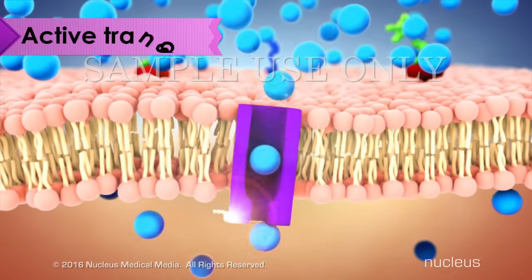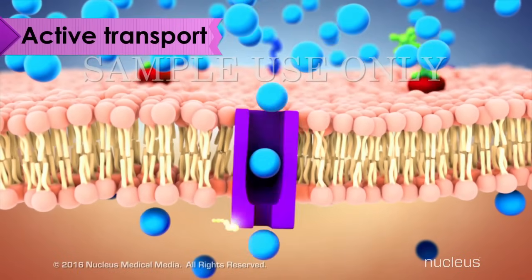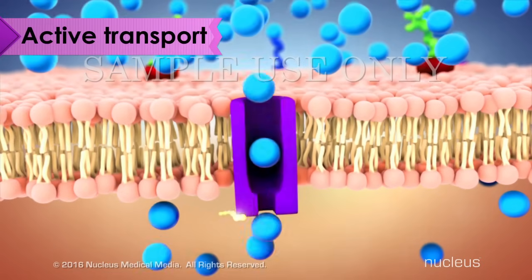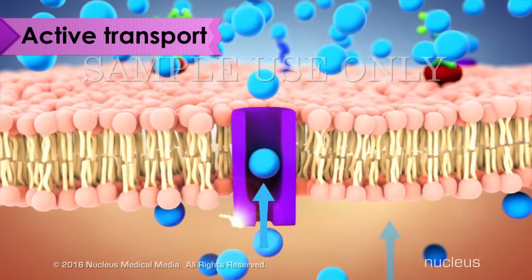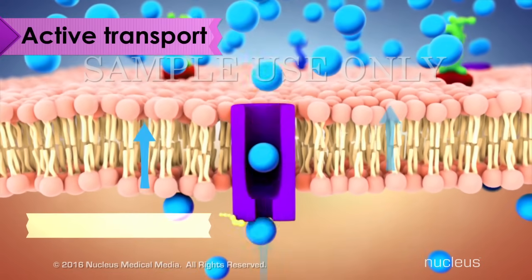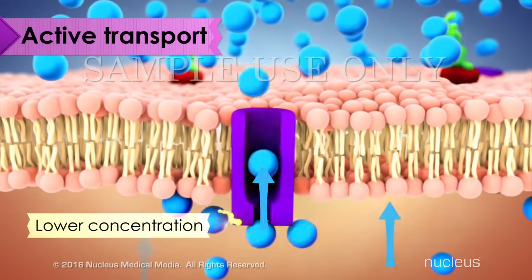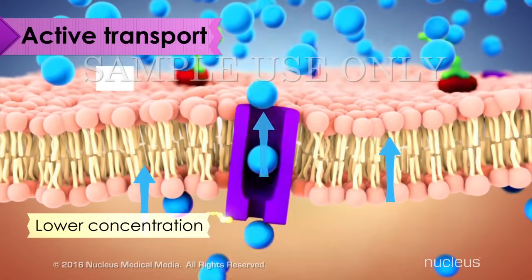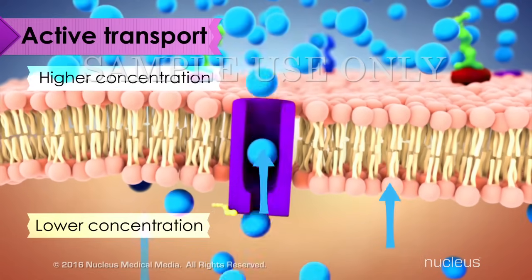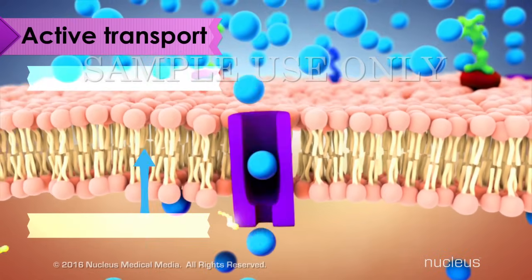The second category of cell transport is active transport. This is when particles move from an area of lower concentration to an area of higher concentration.